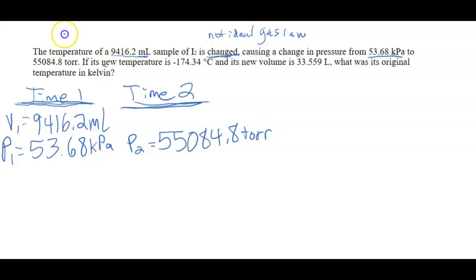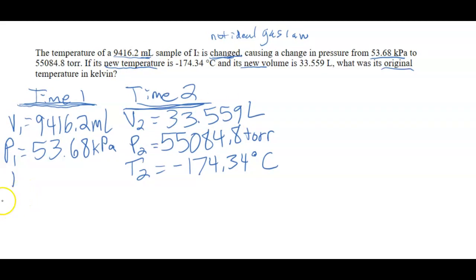If it's new temperature, so new is time two. So this is temperature, so T is for temperature here, is negative 174.34 degrees celsius. And its new volume, so V2, is 33.559 liters. So what was its original temperature in Kelvin? So that means that we're looking here for T1. We do not know what that is and we want it in Kelvin.